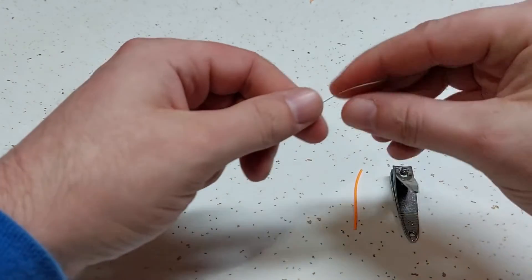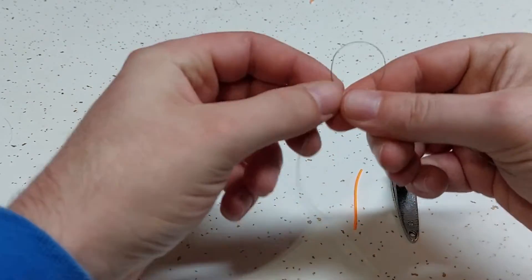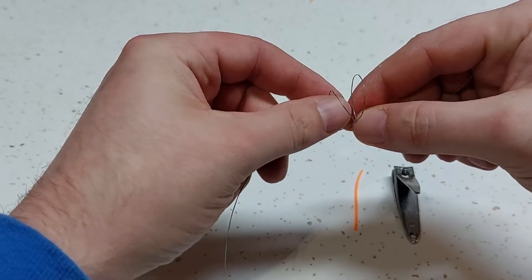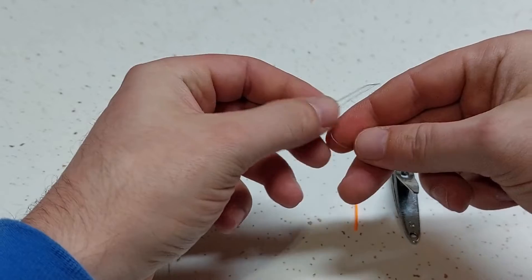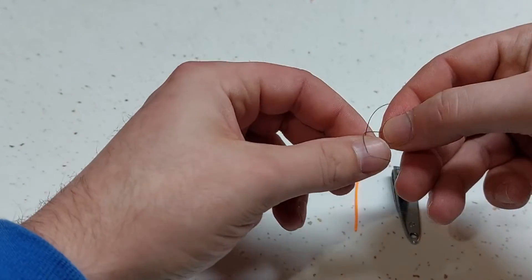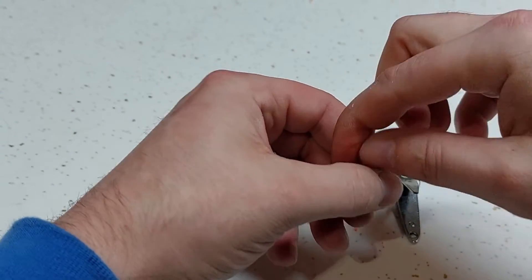Now here we're going to do the same thing. We're going to run it around the back, over the front. There you go - run your tag around the back, over the front, lay it in between your two loops.